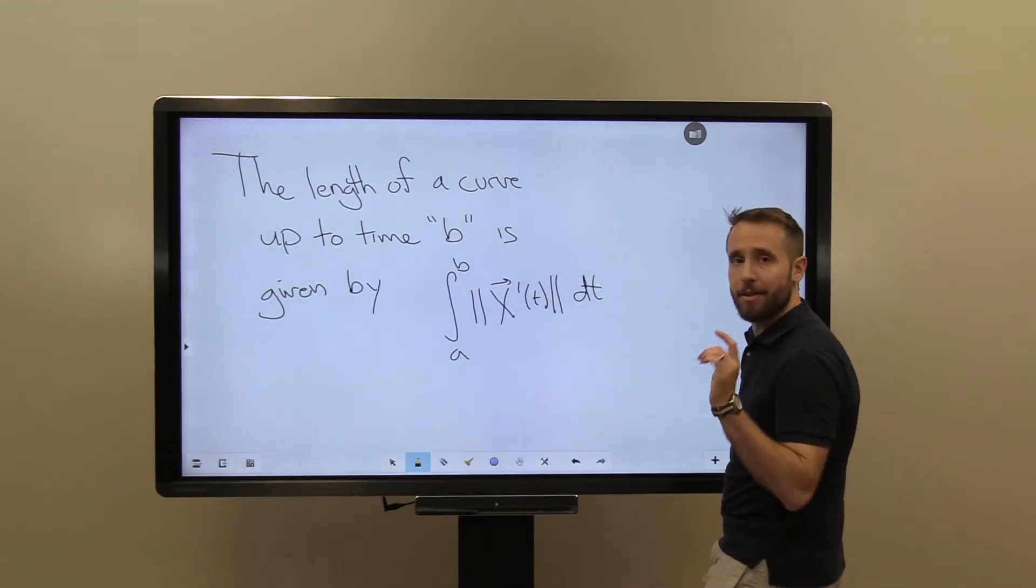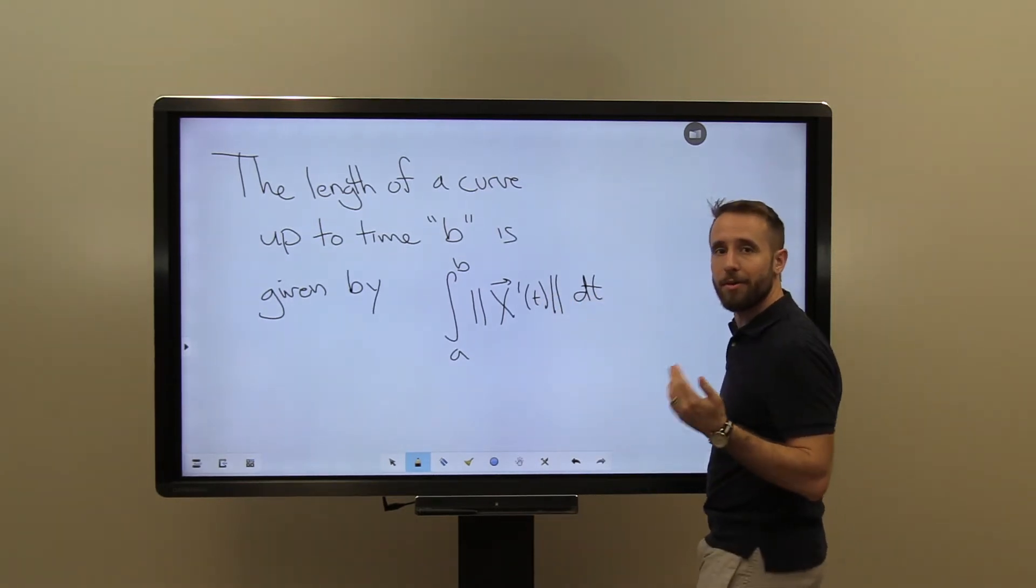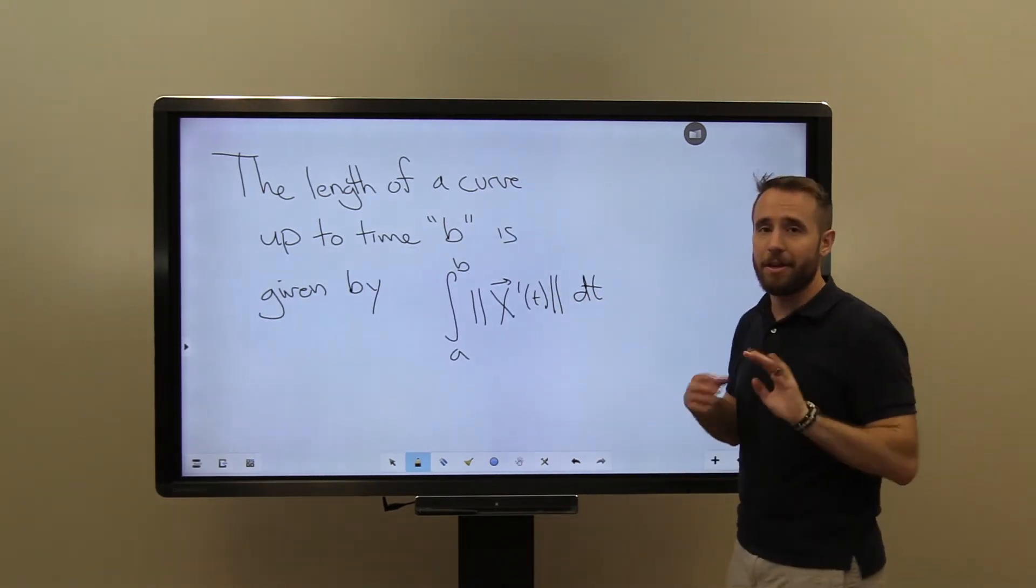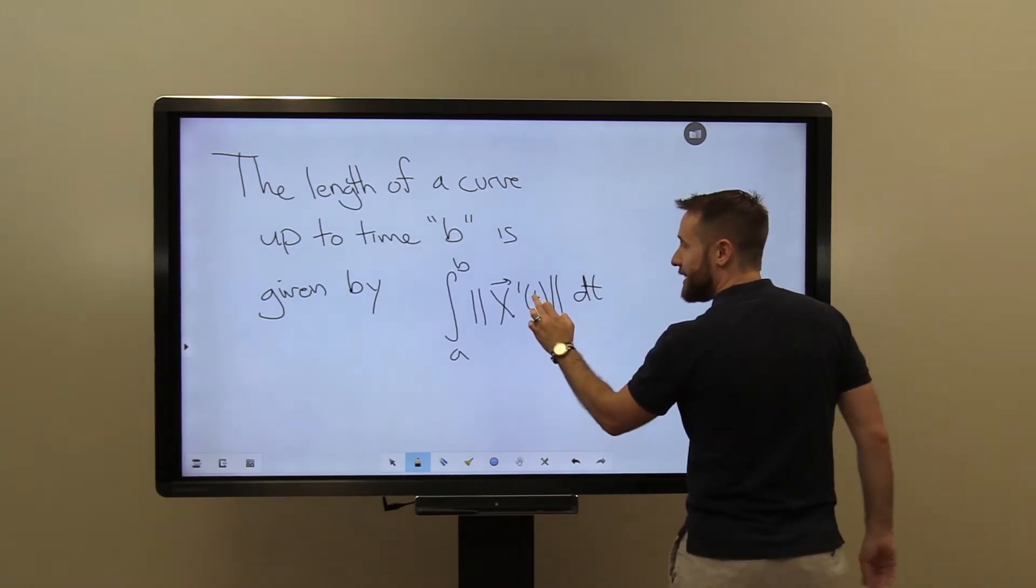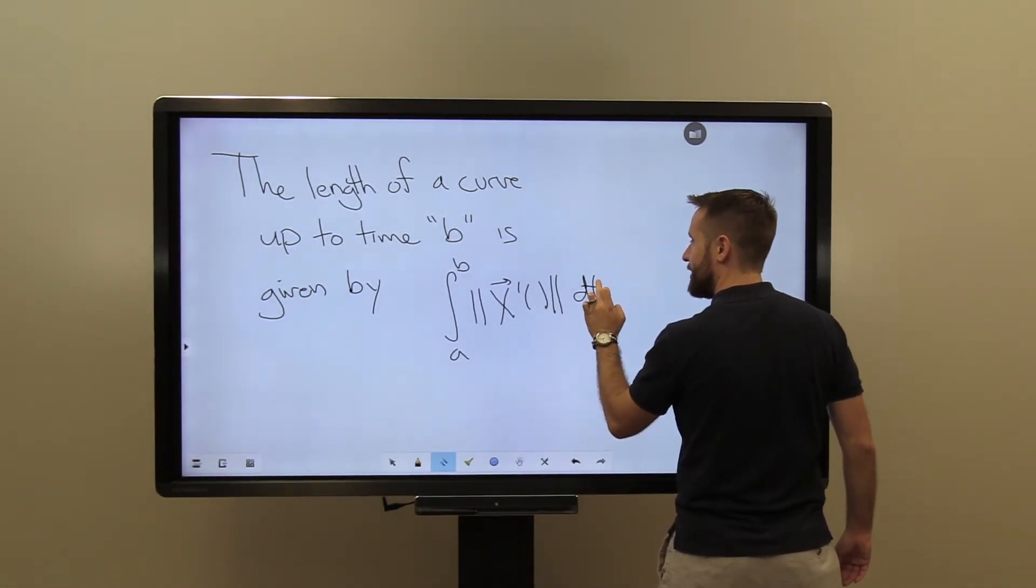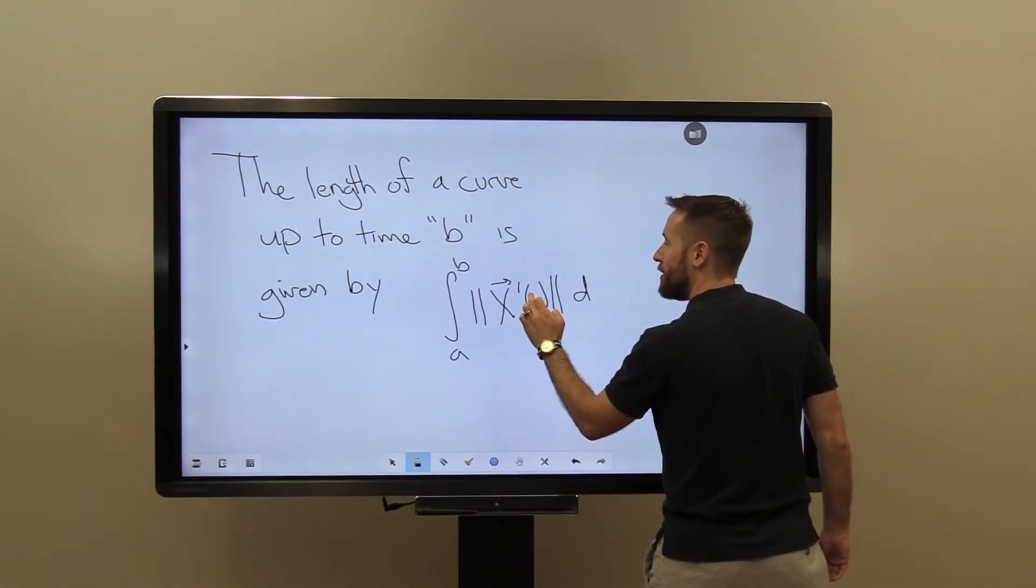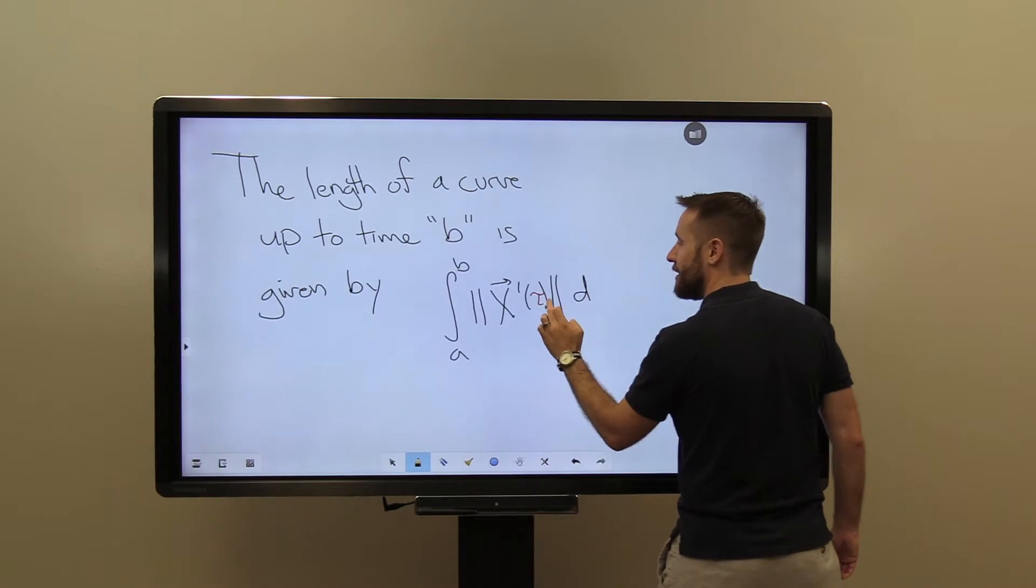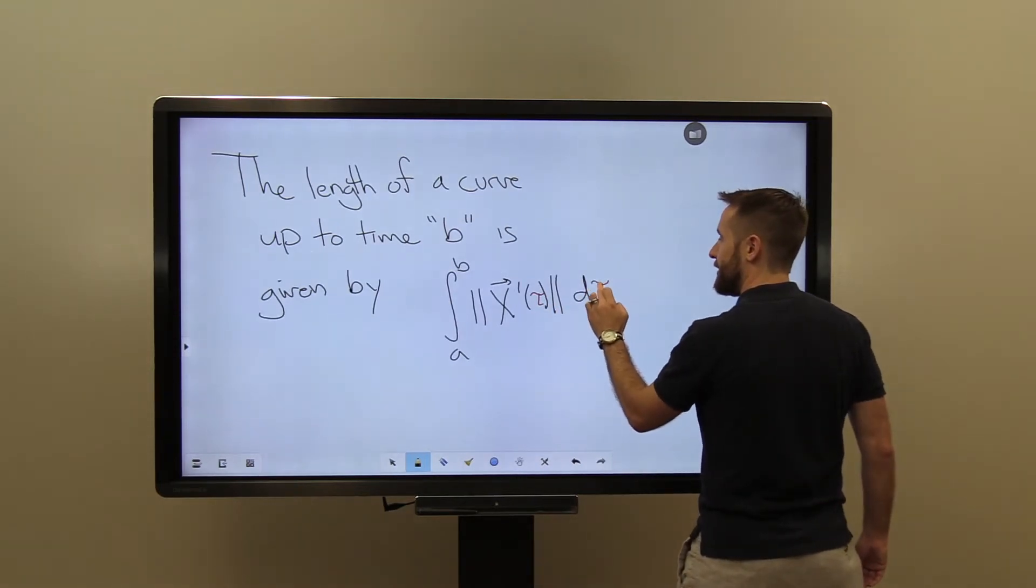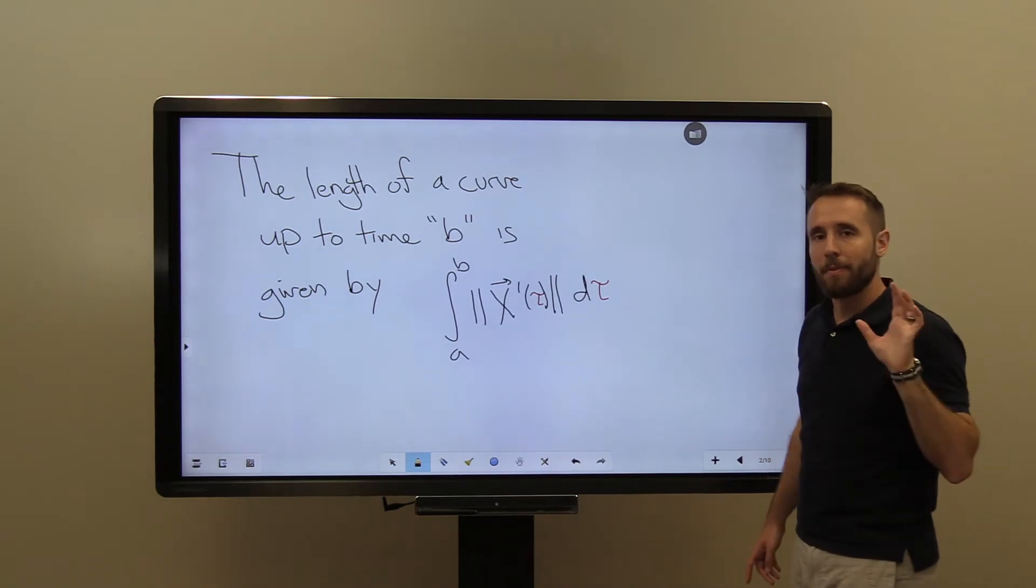So specifically, first, let me do this sort of clever maneuver here where I'm going to change my variable of integration. I'm just going to give it a new name. So instead of t, let's get rid of that t, I'm going to call this tau, sort of classically. It's the Greek letter that looks most like a t. So I'm going to use this Greek letter tau here.